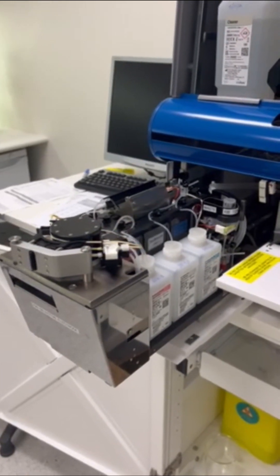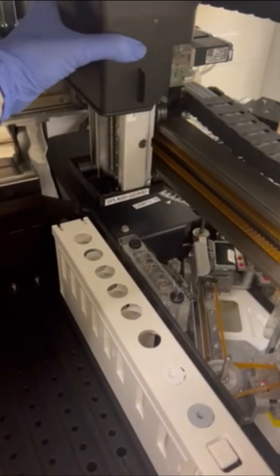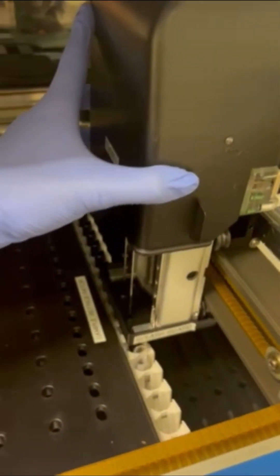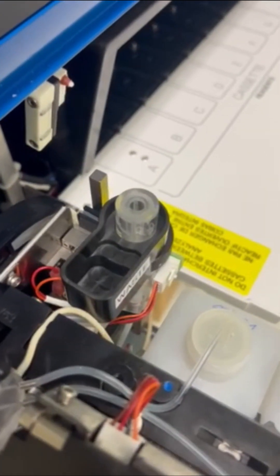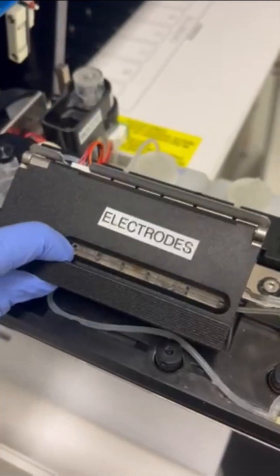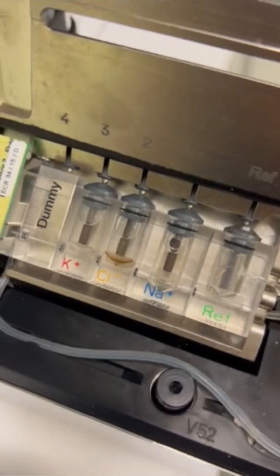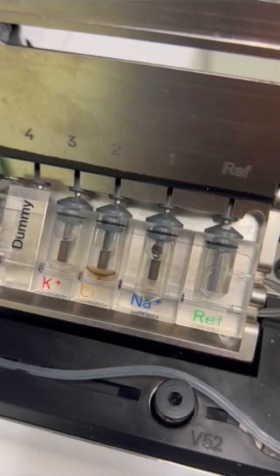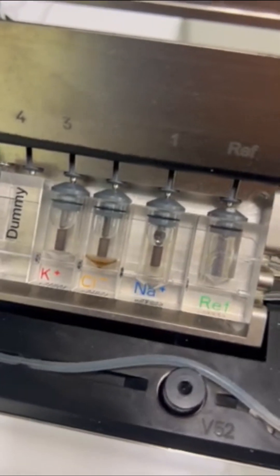ISE stands for ion selective electrode and this module works independently to the rest of the integra. The probe will pick up the patient sample again and move directly over to the ISE where it will inject it into the ISE tower. The patient sample will move from the ISE tower through the tubing through to the electrodes and pass through potassium, chloride and sodium. Each electrode has a membrane and when touching the patient sample will detect ion exchange and a change in charge. When the patient sample runs through all of these it will flow through the tubing and directly out through the waste.